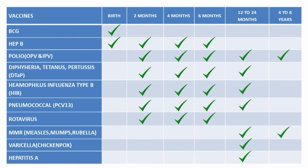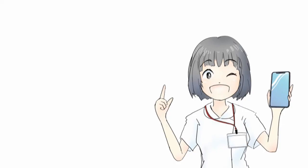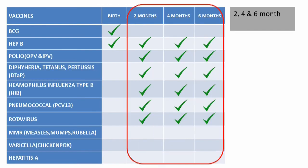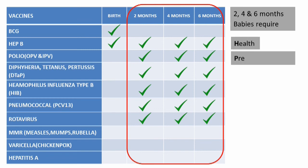Now, how do you remember all the vaccines and the schedule? I'll make it easy and simple with mnemonics. At birth: "B4" — BCG and hepatitis B. For the two, four, and six month vaccines, the mnemonic is: "Two, four, and six month old babies require health precaution during hospitalization to prevent rotavirus."